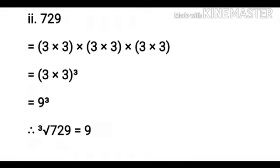In sum number 2, we have to find the cube root of 729. Our first step is to find the factors of 729, which is equal to 9 cube. As 729 is equal to 9 cube, therefore the cube root of 729 is equal to 9.